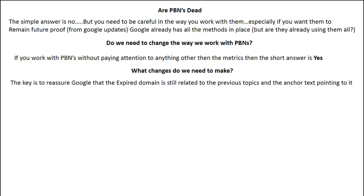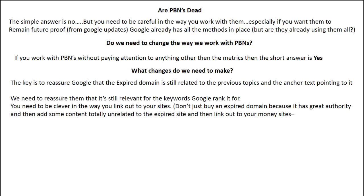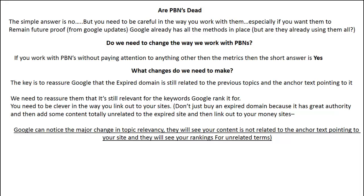So what changes do we need to make? The key is to reassure Google that the expired domain is still related to the previous topics and the anchor text pointing to it. We need to reassure them that it's still relevant for the keywords Google ranked it for. You need to be clever in the way you link out. Don't just buy an expired domain because it has great authority, then add totally unrelated content and link out to your money sites. Google can notice the major change in topic relevancy, will see that your content is not related to the anchor text pointing to it, and will see you ranking for unrelated terms — an undesirable result for Google.